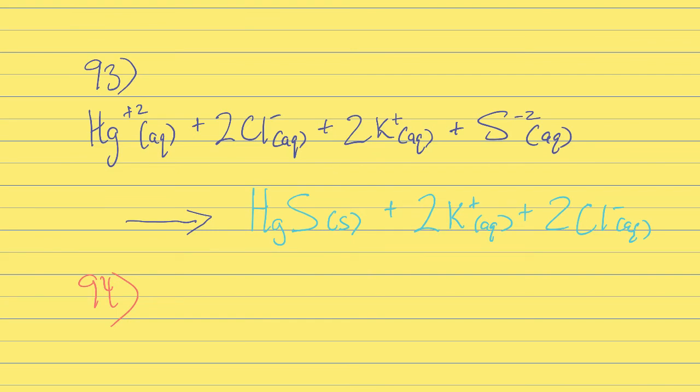I'm looking at question 93 now. It wants us to write the full ionic equation. When we dissolve these in water, all of them are aqueous. Notice the mercury has a +2 charge written next to it, with (aq). Potassium and chloride, we have 2 of each. Chlorine is -1, potassium is +1, so we put those charges next to them. They're all aqueous. Sulfur has a charge of -2 and is aqueous. That's the first step on that line. Then we draw an arrow.